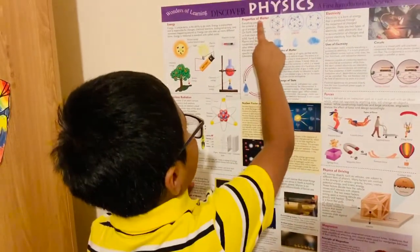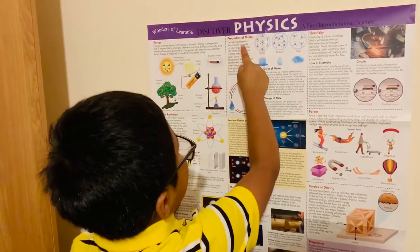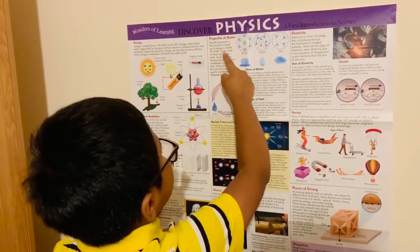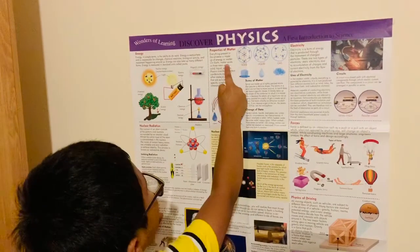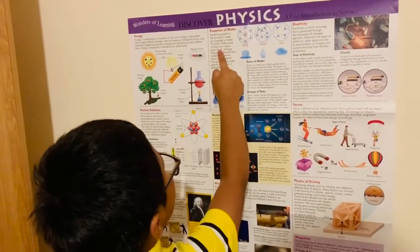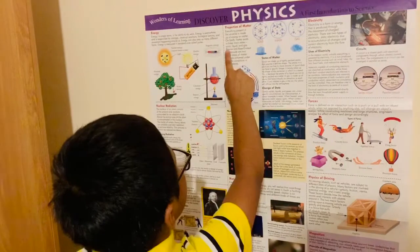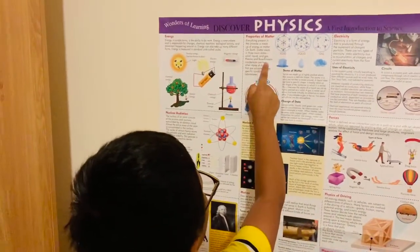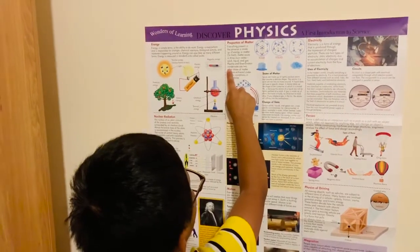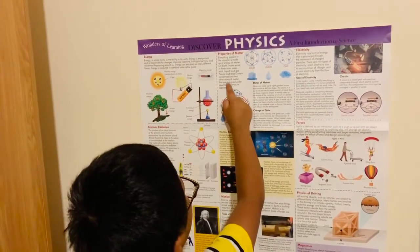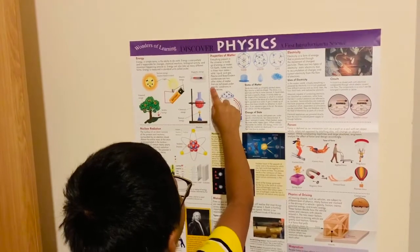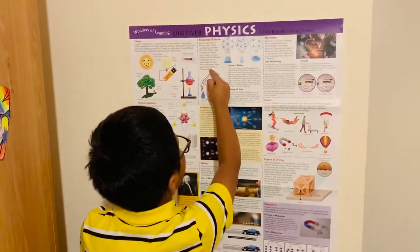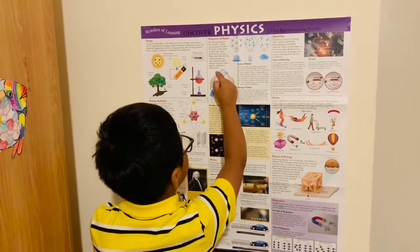Properties of matter. Everything present in the universe is made up of energy or matter. On Earth, matter exists in three main states: solid, liquid, and gas. Plasma and Bose-Einstein condensate are two other states of matter that are achieved under specific conditions in laboratories.